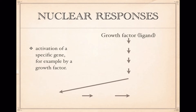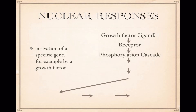Let's look at the steps of that. Let's say that there is a growth factor released into a test tube of growing cells. This growth factor is a little signaling molecule, otherwise known as a ligand. It's going to interact with a receptor protein on the surface of certain cells. This receptor protein is going to change shape and trigger a phosphorylation cascade, which is going to transduce the signal through the cytoplasm.